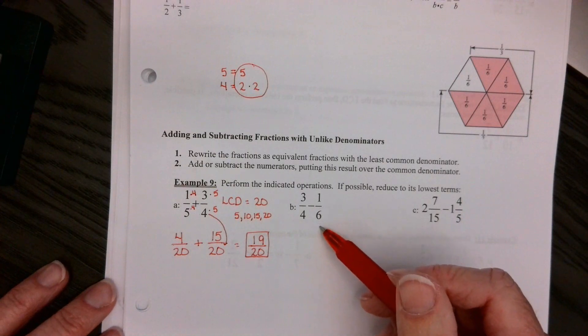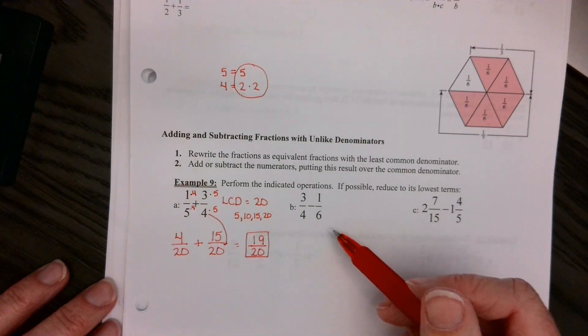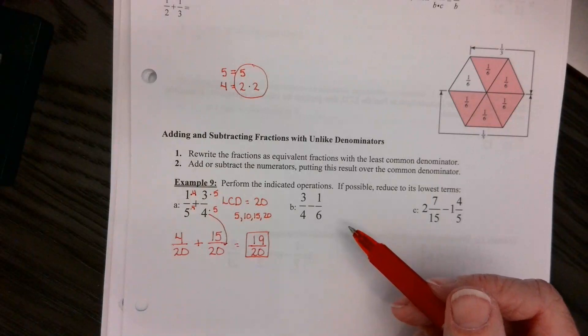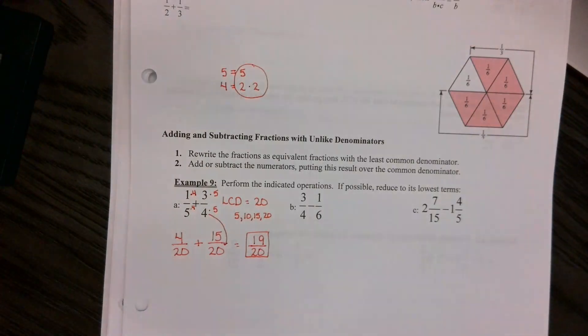Now, over here, four and six. We talked about, yes, you can multiply them and get 24. It'll work. It's just that if you, that's just not the smallest one. It's not that big a deal.